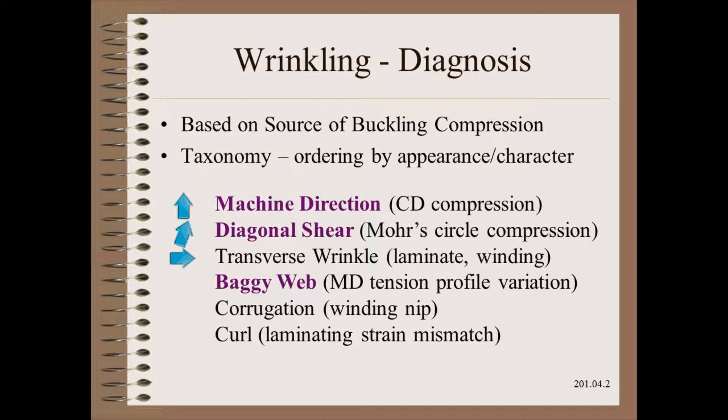We can organize nearly every wrinkle type into a half dozen different major categories. Organizations such as this are called taxonomy. One system you're all familiar with is biology.